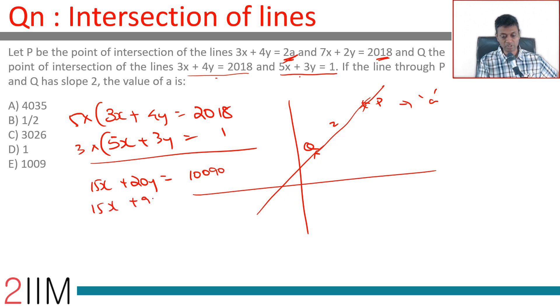15x + 9y = 3. Brilliant. 15x + 20y is 10,090, 15x + 9y = 3. Subtract one from the other, we get 11y = 10087.